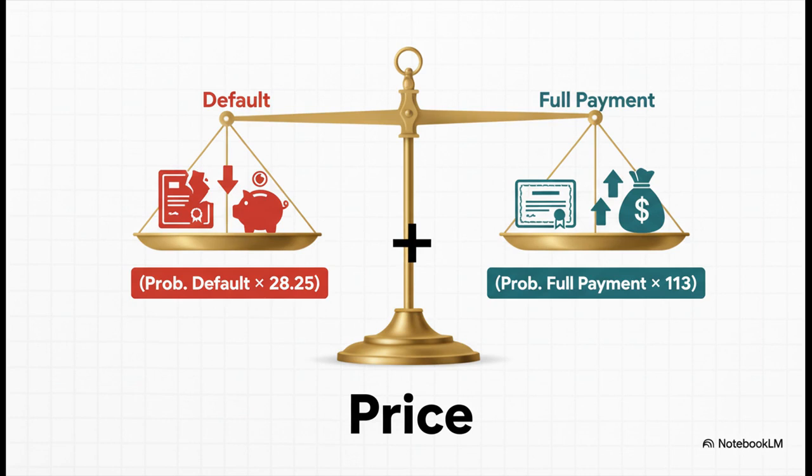And here's the full picture. We just add the other side of the coin, the probability of getting paid in full, times that full payout of $113. The sum of these two weighted possibilities has to equal the price today. So think about it. We have almost all the pieces of the puzzle, except the probabilities themselves.